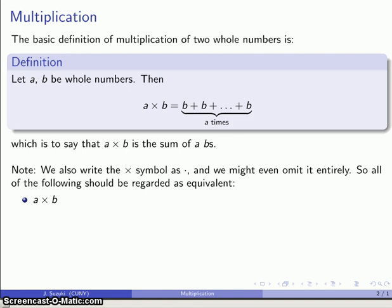So all of the following should be regarded as completely equivalent: a St. Andrews cross b, a dot b, and then finally just putting the two things to be multiplied together, a b.